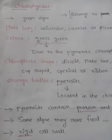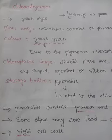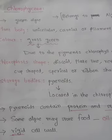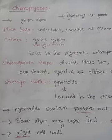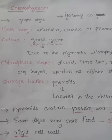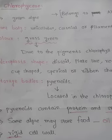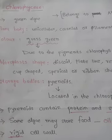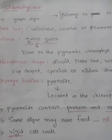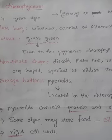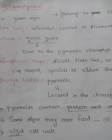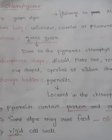Next, plant body. The plant body of the Chlorophyceae is unicellular, or colonial, or filamentous. Unicellular means single cell — if the plant body has only one cell. Unicellular example: Chlamydomonas. Colonial means in some Volvox species, thousands of Volvox cells combine together to form one colony.